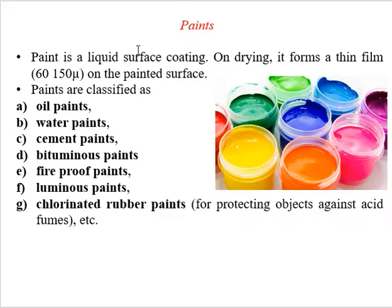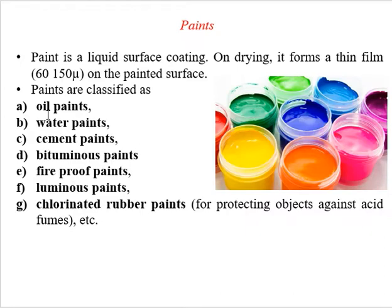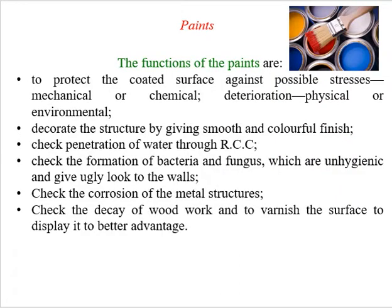Let's start with paint, the most commonly used term. Paint is a liquid surface coating that we apply on any surface in order to improve its appearance. Paints have been categorized into the following different categories: oil paints, water, cement, bituminous, fireproof paints, and rubber paints — basically seven categories.